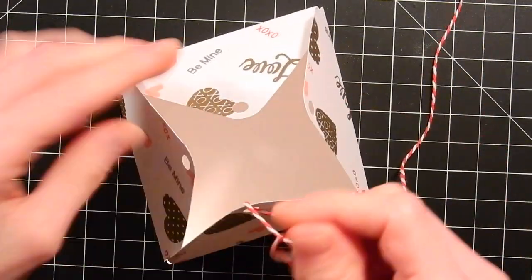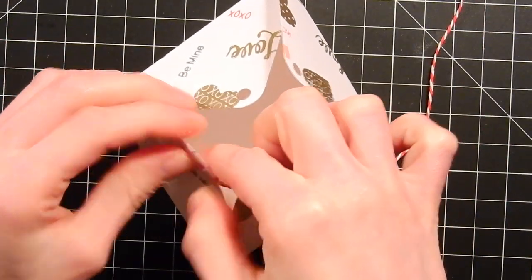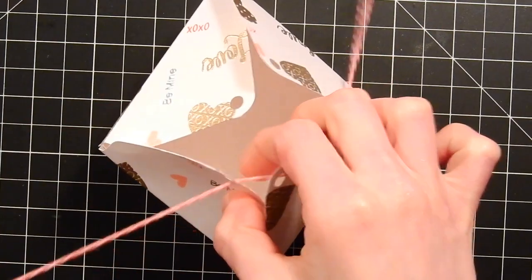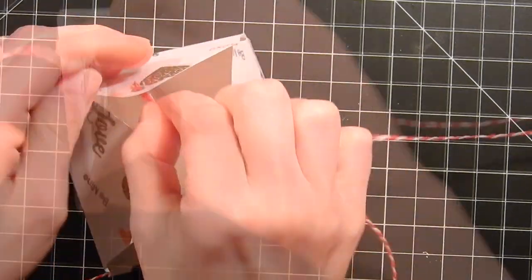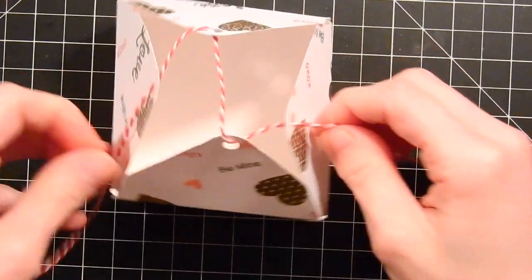Finally I'm going to add some twine to my little box here. You could use ribbon or whatever other type of string element that you have but I'm just going to thread this little bit of baker's twine through to go ahead and tie my box together and that's going to do it. So I hope you've enjoyed.